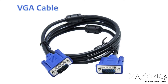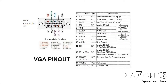The VGA cable has 15 pins: 5 pins on the top row, 5 pins in the middle row, and 5 pins at the very bottom. Each pin has a function of its own. If you see here, the pins have different functionalities based on their pin numbers.